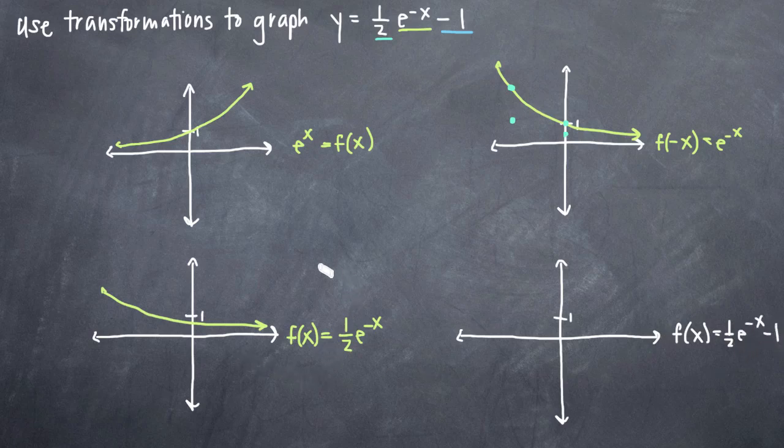So if we're talking about f of x equals one-half e to the negative x minus one, we have the same graph that we did over here except we move it down one unit. So instead of intersecting the y-axis here at one-half, we're going to be intersecting at negative one-half.